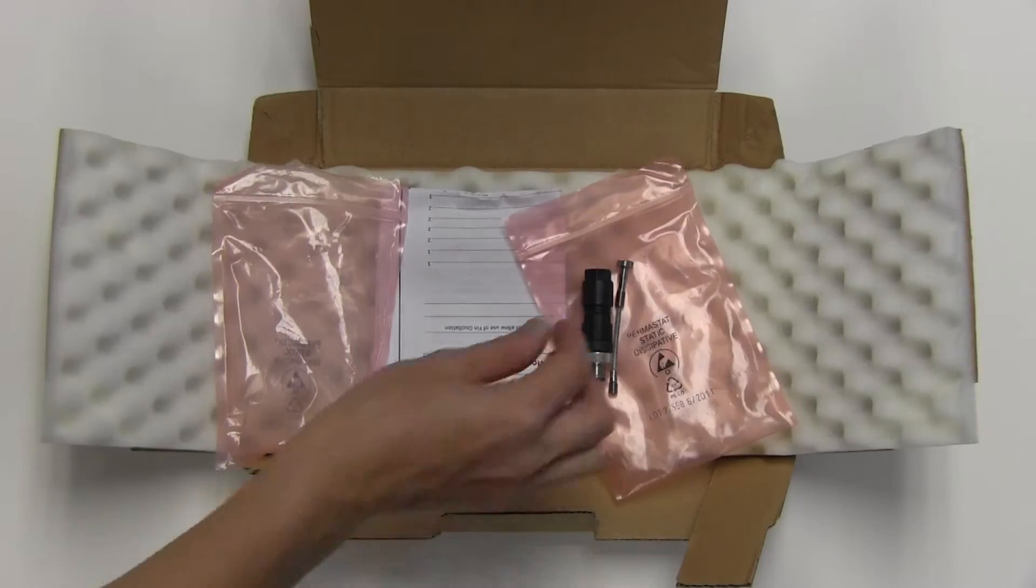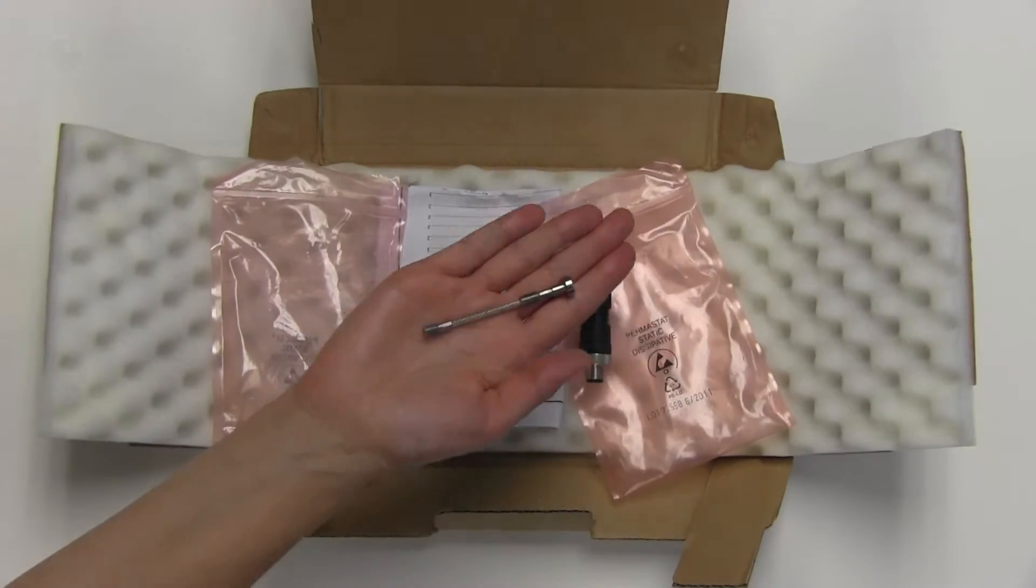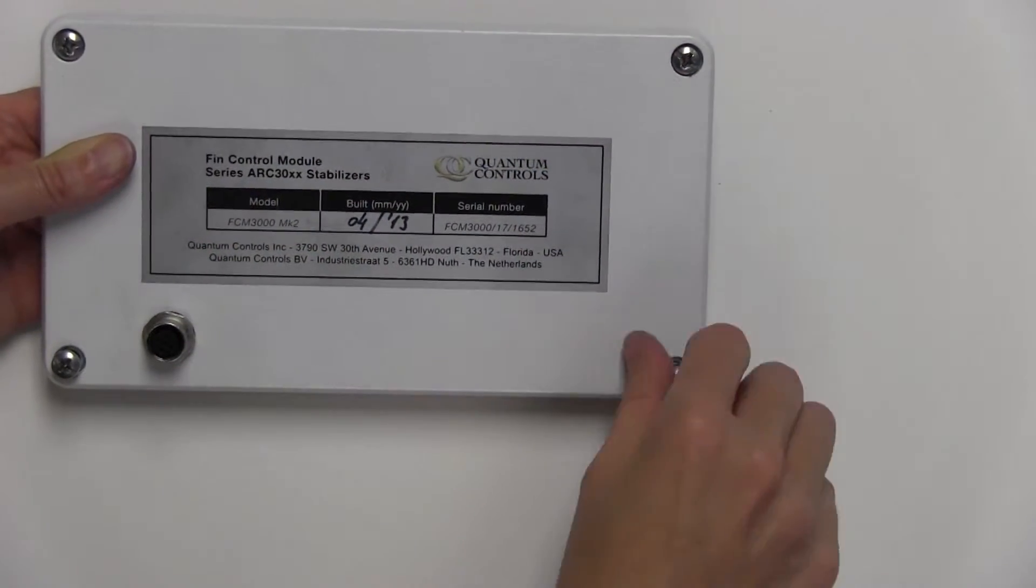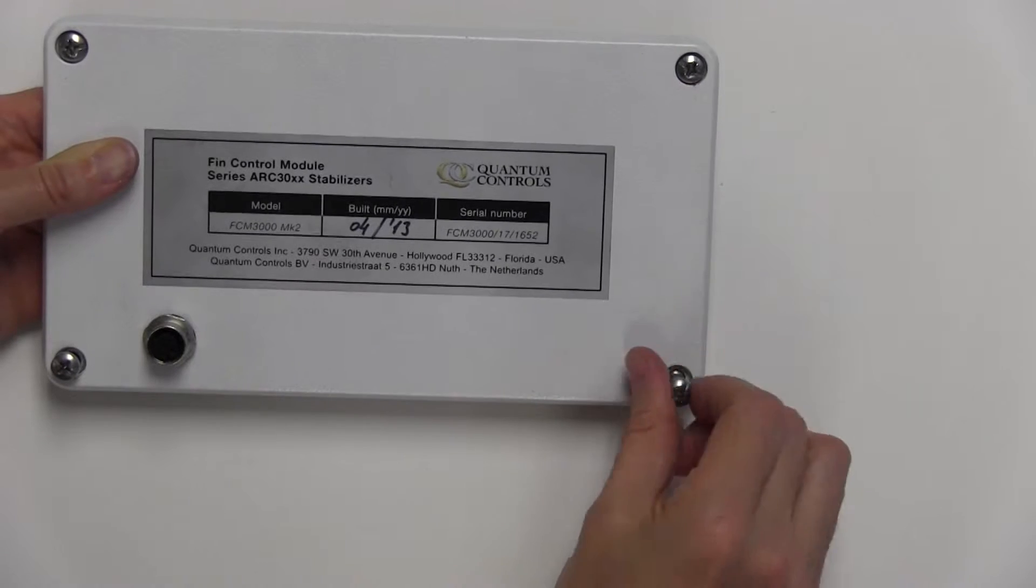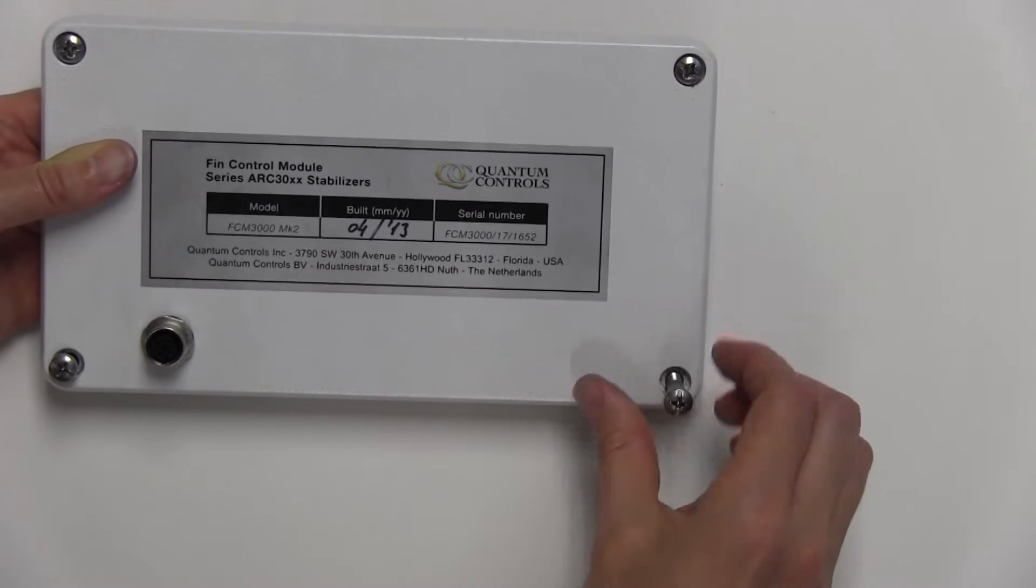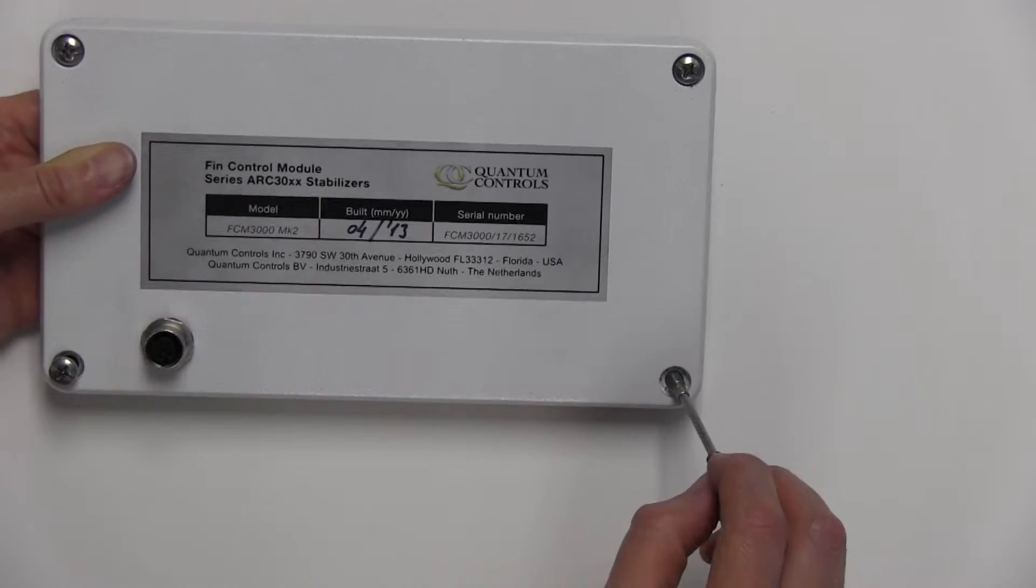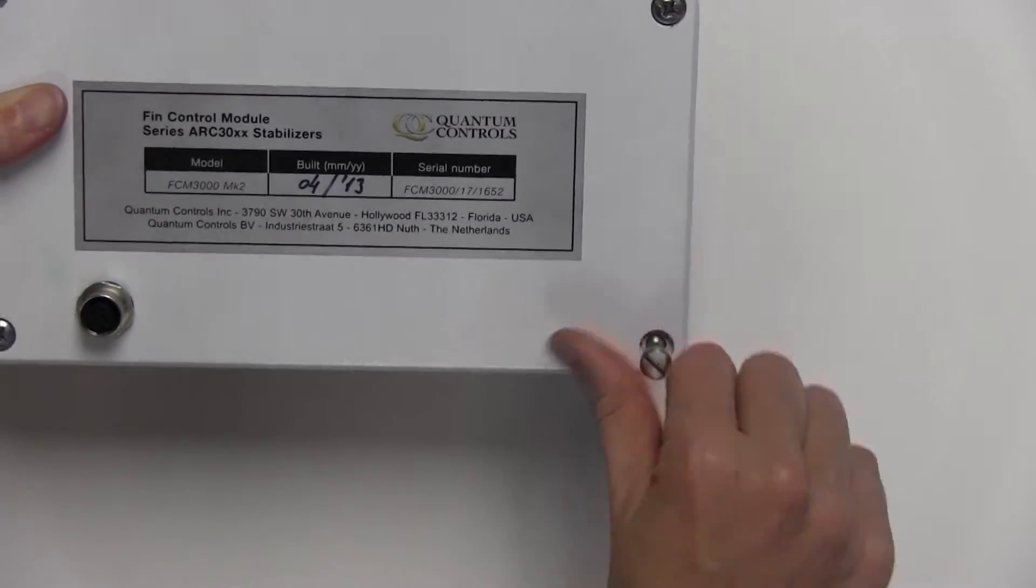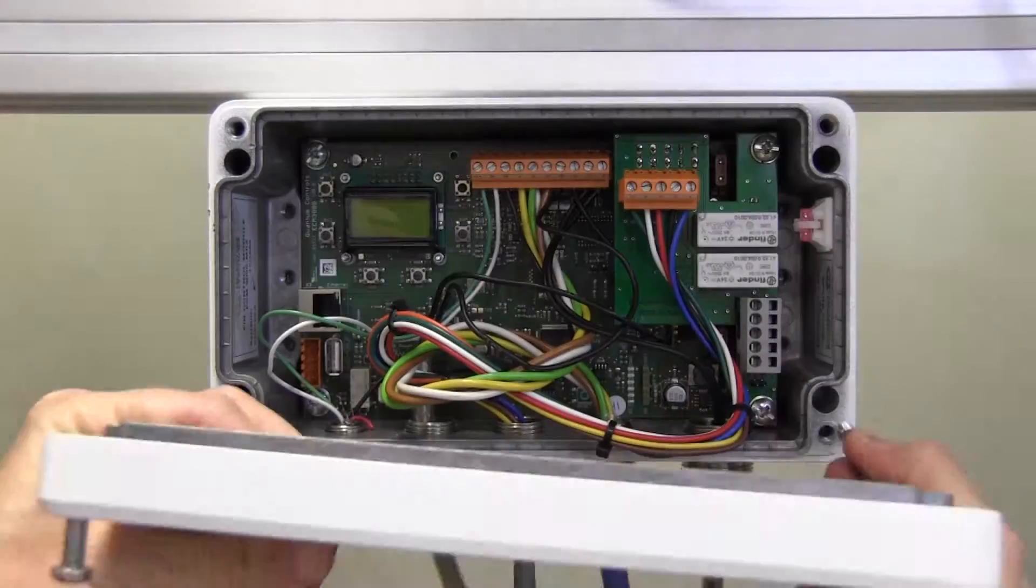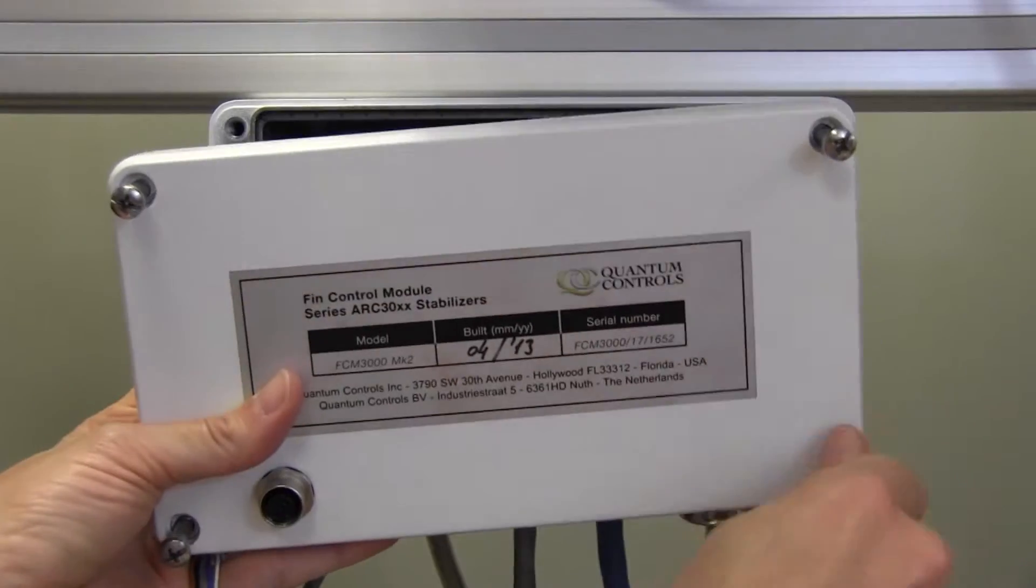Next, we'll install a tether between the fin control module and its cover. Remove the screw from the lower right corner of the fin control module cover and discard the screw. Screw the provided tether into the fin control module cover and then into the fin control module body.